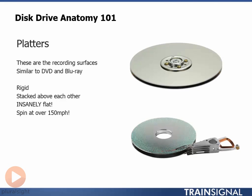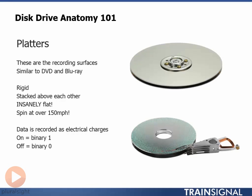Data is stored as ones and zeros — that's the way the binary system works. But actually if we take a closer look, data is stored as electrical charges. A positive electrical charge might be considered as a binary 1, whereas a negative electrical charge may be considered as a binary 0. It's important to note that on disk drive platters, the top and the bottom surface are both used for recording, which enables disk drive manufacturers to push maximum recording density out of each and every disk drive.